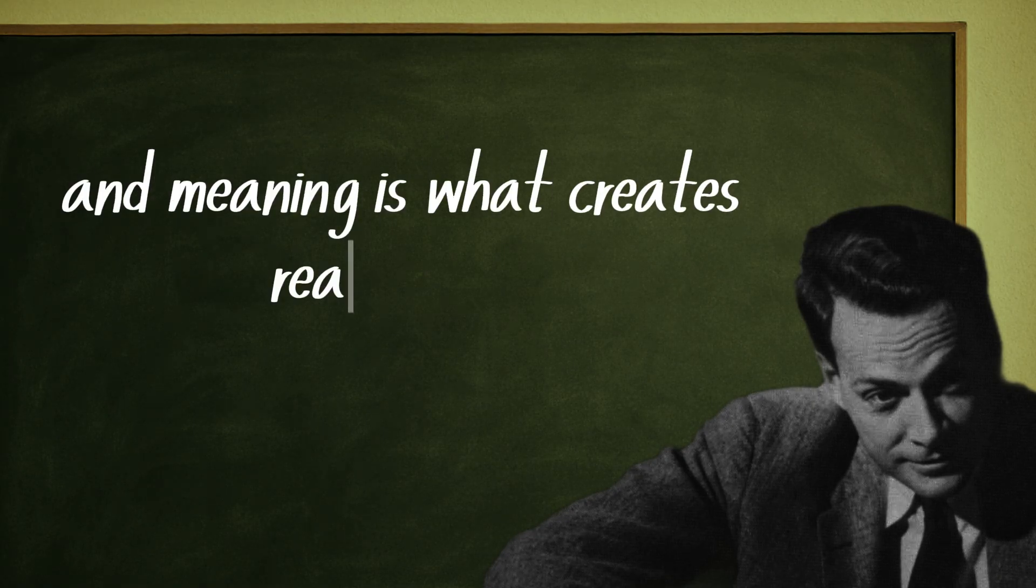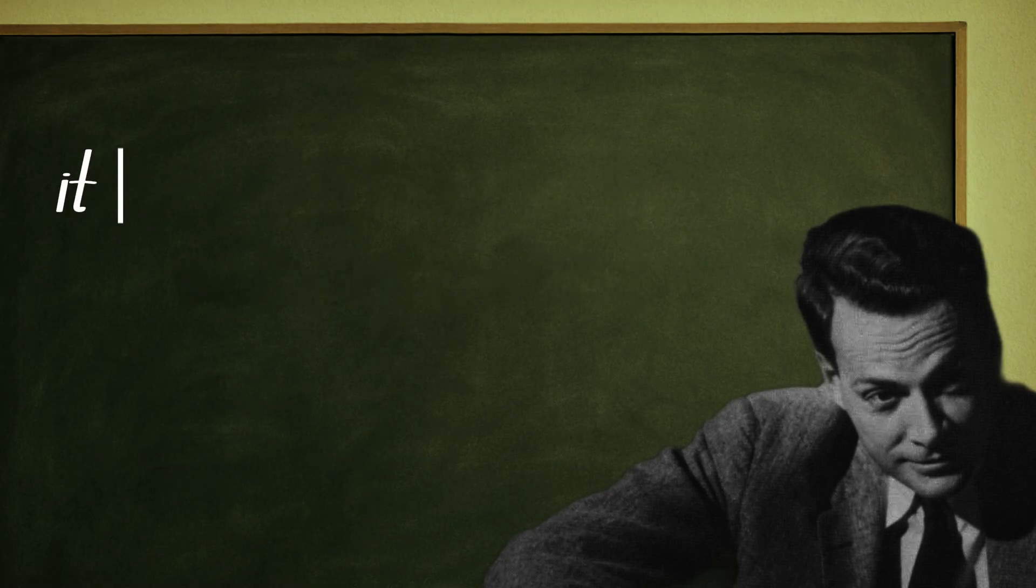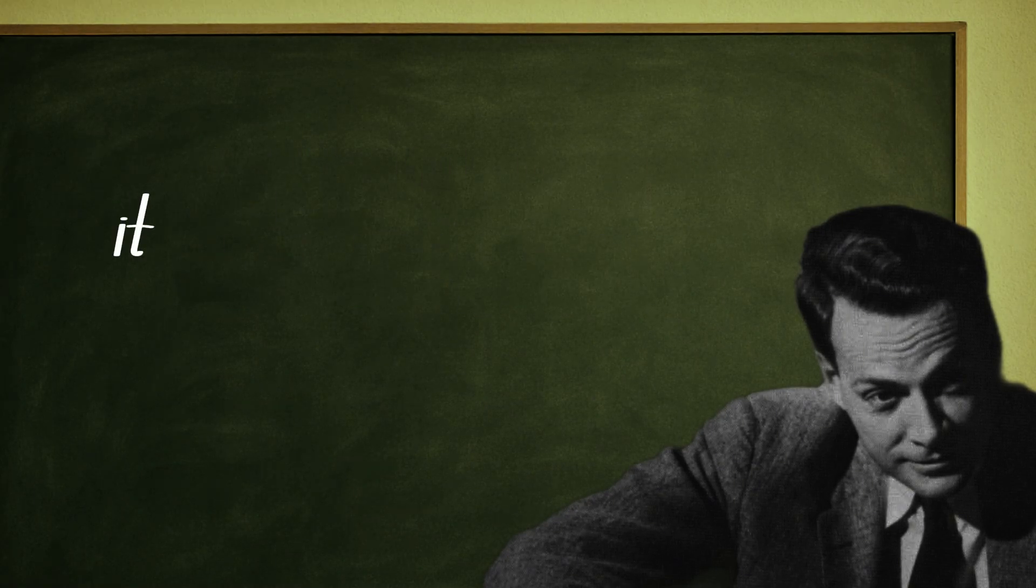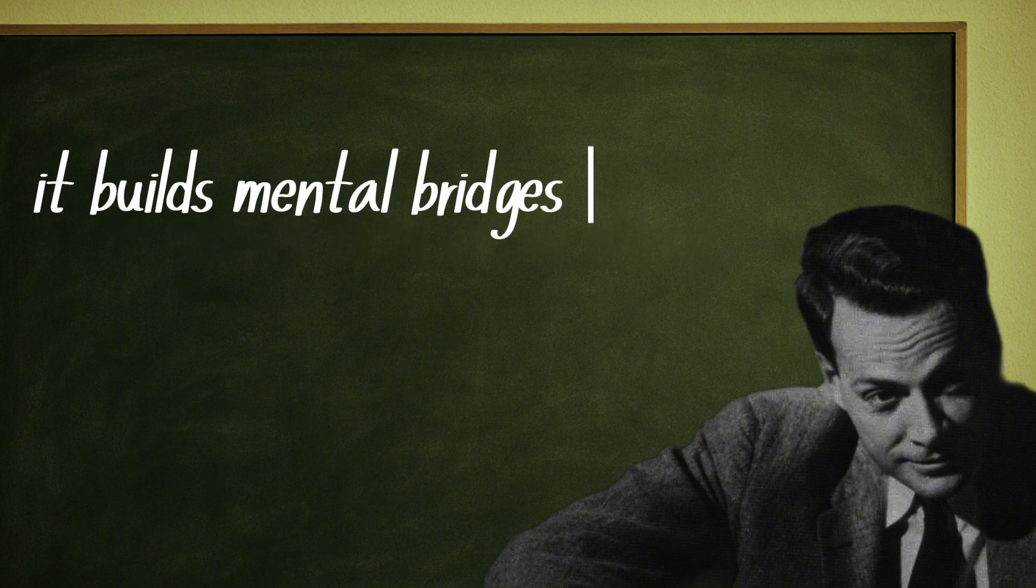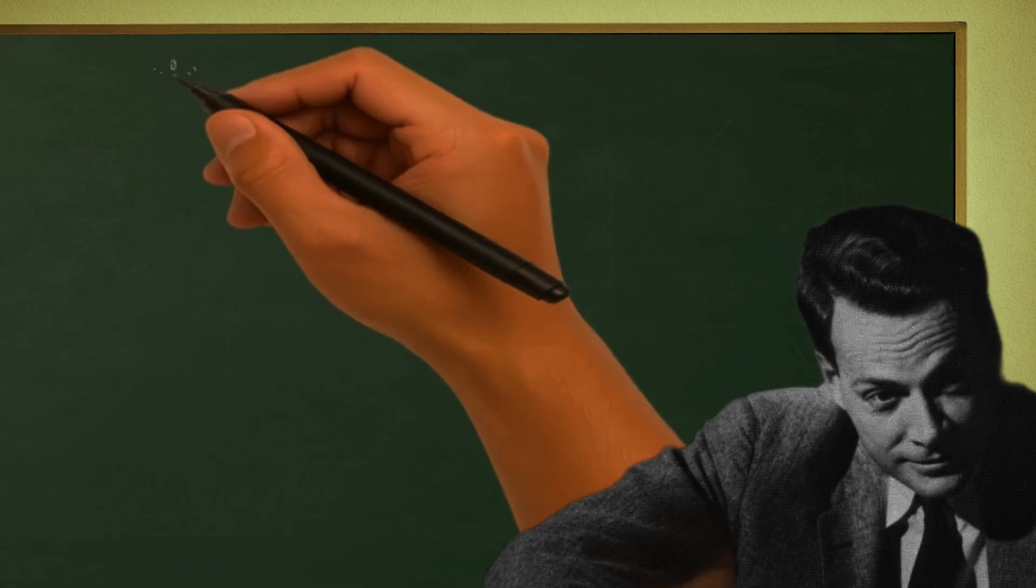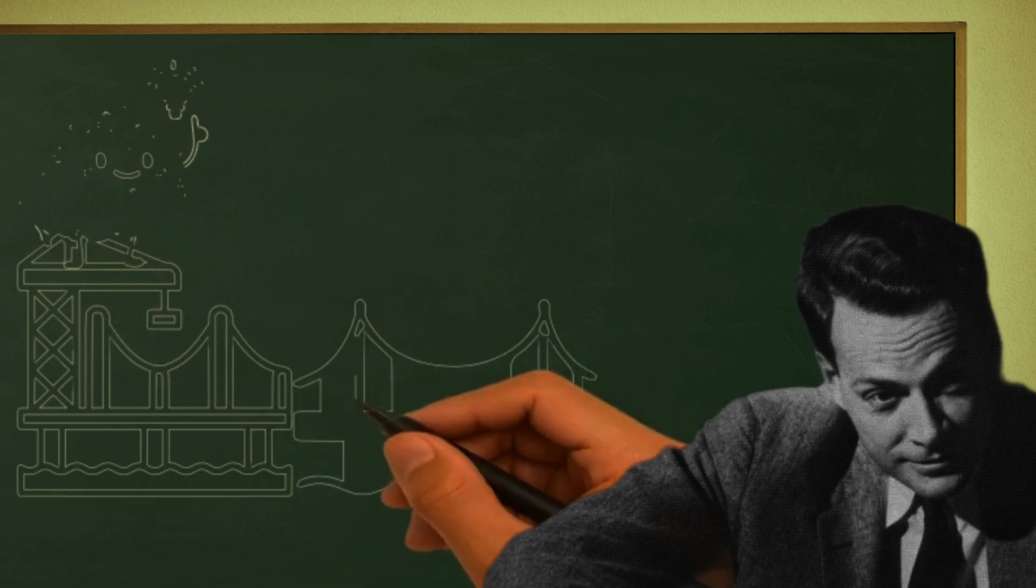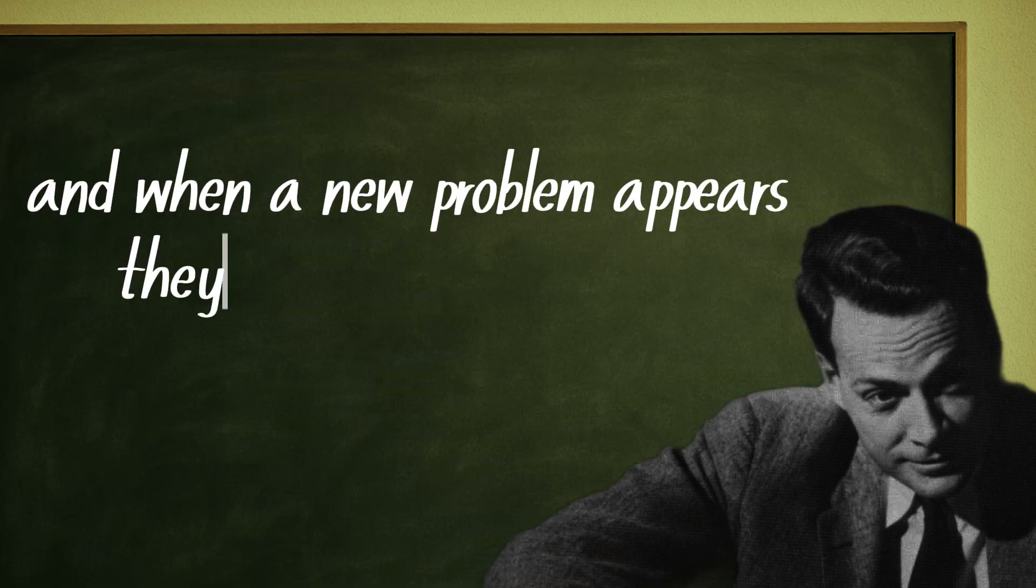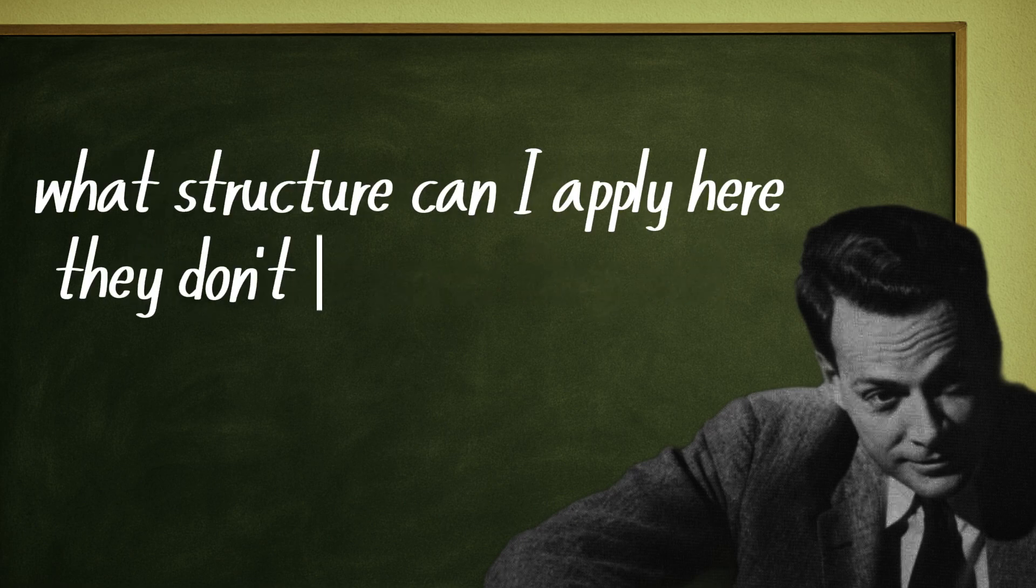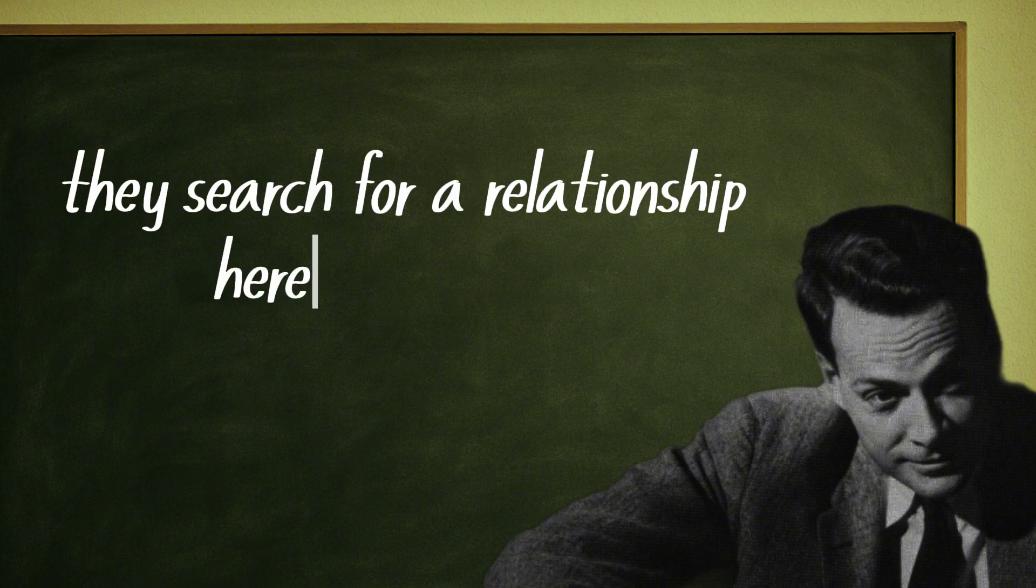And meaning is what creates real memory. That's why when you truly understand an idea, it doesn't stay trapped in one context. It spreads, it blends with other ideas, it builds mental bridges that no one else can see. That's how creative thought is born. A genius doesn't memorize answers, they build mental models. And when a new problem appears, they don't panic. They ask, what structure can I apply here? They don't search for a memory, they search for a relationship.